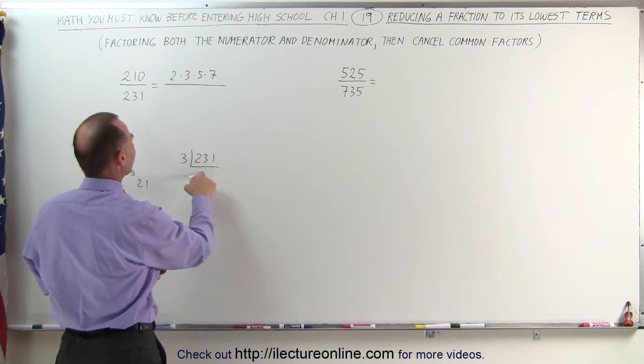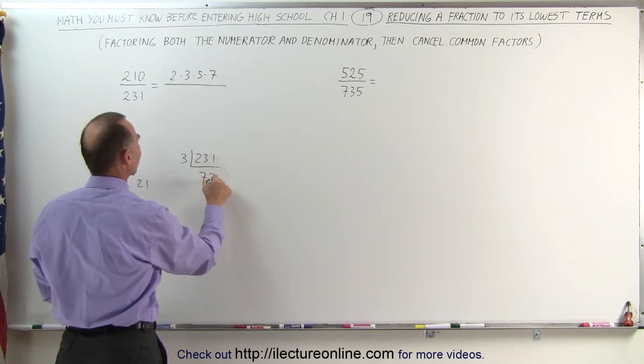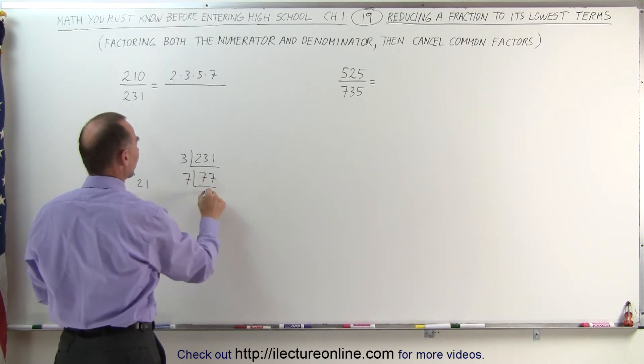3 goes into 231. 3 goes into 210 70 times. 70 times 3 is 210. That leaves us 21. That means 77. 77 can be divided by 7, which gives us 11.